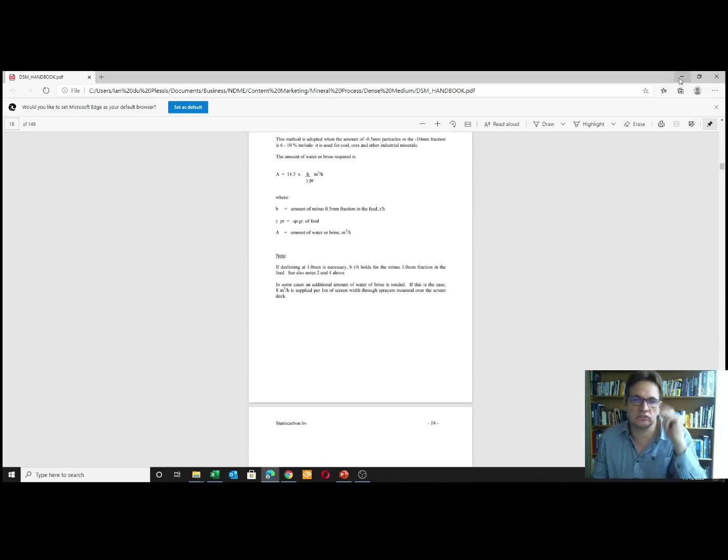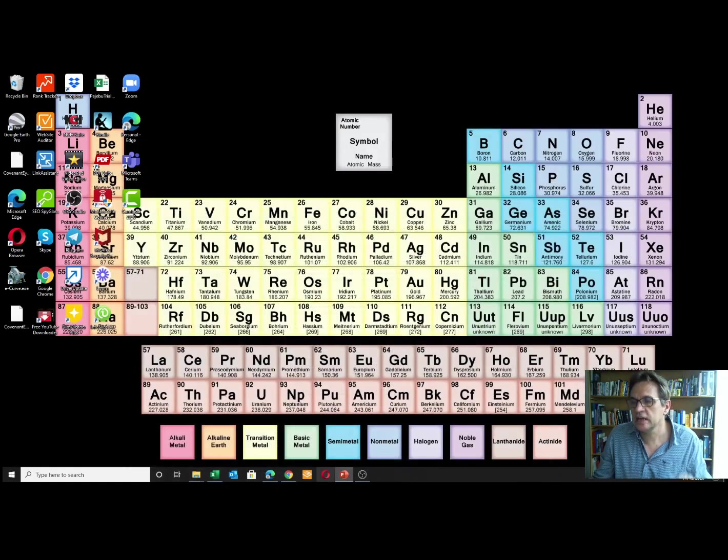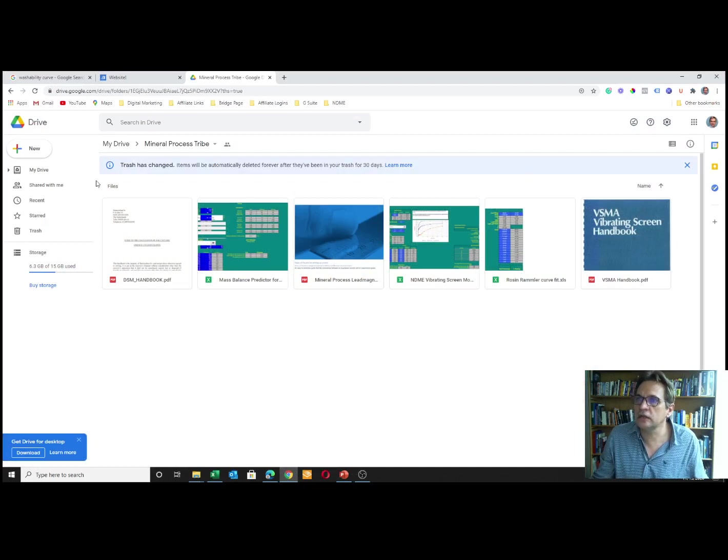Where you can get it is I put all the stuff that I make available to you in this folder on Google Drive. You'll see the DSM manual, the Dutch State Mines manual, the mass balance predictor over a cyclone or screen, some lead-I-can guidelines to help you initiate a design—it's often just a very good guess based on industry experience—and the vibrating screens manufacturer's manual. You can download all of this; it's available to you.